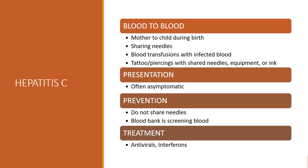Hepatitis C is spread blood to blood. It can be from mother to child during birth, but most frequently from sharing needles — and that can include blood transfusions, tattoos and piercings, sharing needles, anything like that. The presentation is often asymptomatic. Prevention: there is no vaccine. Don't share needles, and the blood bank is now screening blood.